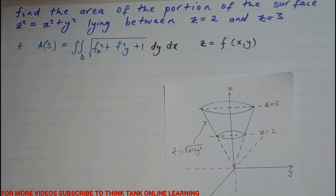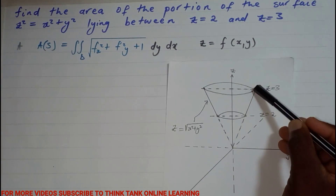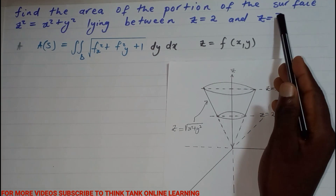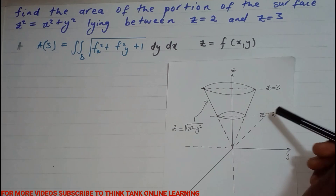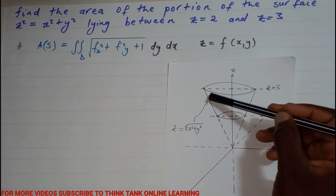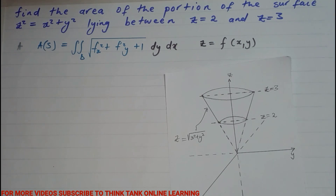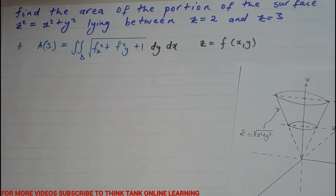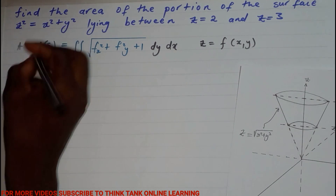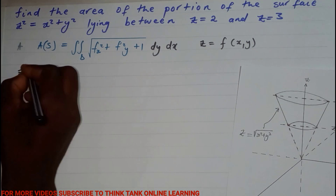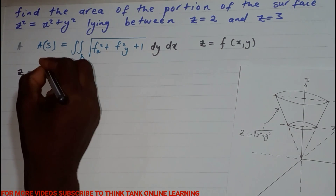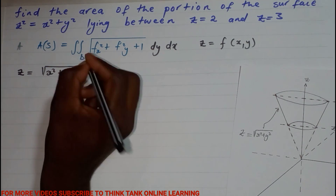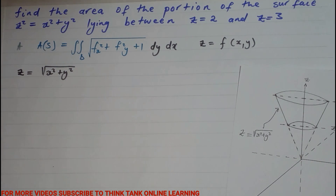We're given a cone, with the upper plane z = 3 and the lower plane z = 2. To find the surface area, I'm going to rewrite the equation as z = √(x² + y²). If you're not comfortable with integration or differentiation, you should use the second method, as this one can be tricky.